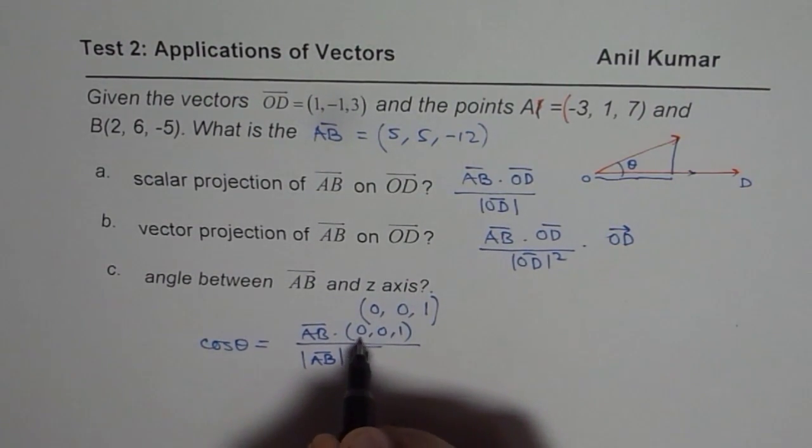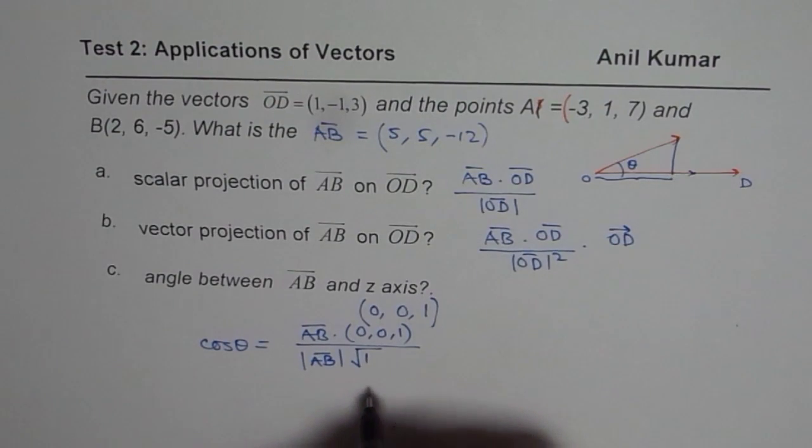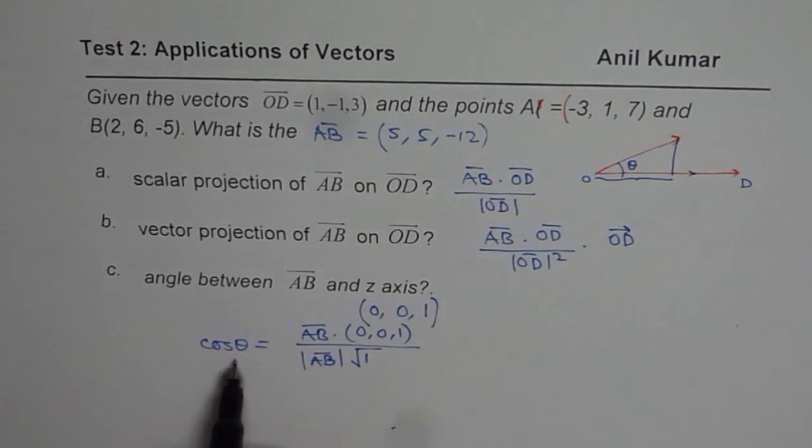0 squared plus 0 squared plus 1 squared, square root. So that is 1. Now from here you can find what θ is. So you can find this answer.